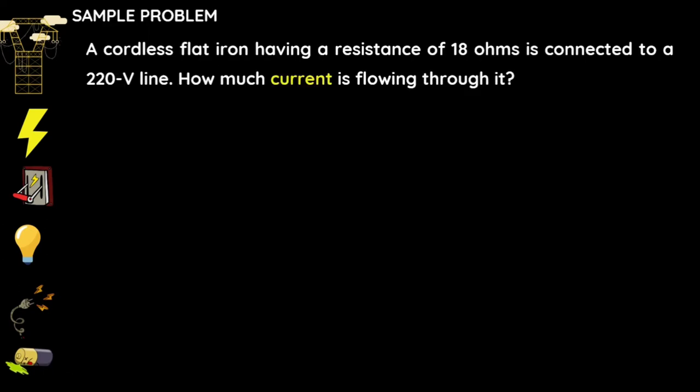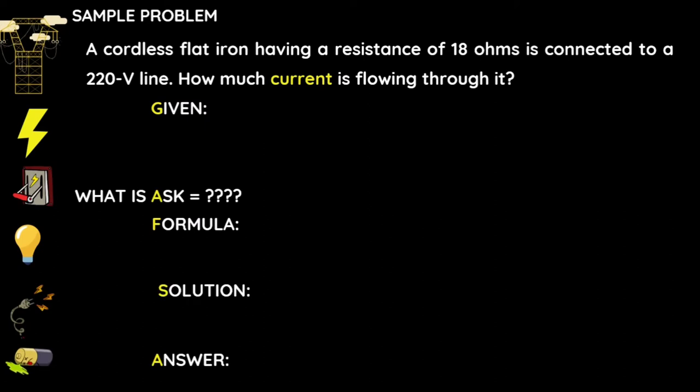Let us have a sample problem. A cordless flat iron having a resistance of 18 ohms is connected to a 220 volt line. How much current is flowing through it? In computing word problems, we will use the mnemonics GAPSA: given, what is asked, formula, solution, then answer.